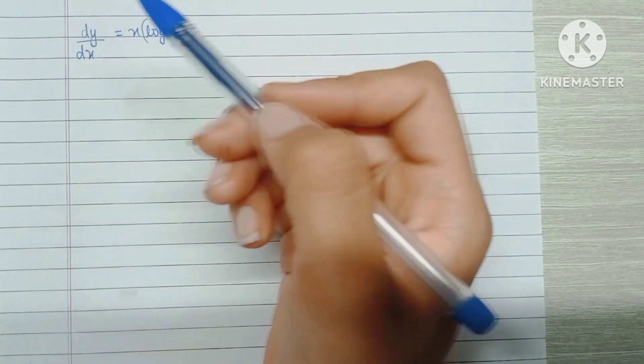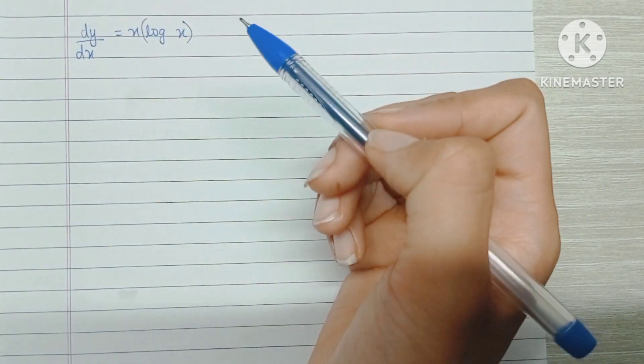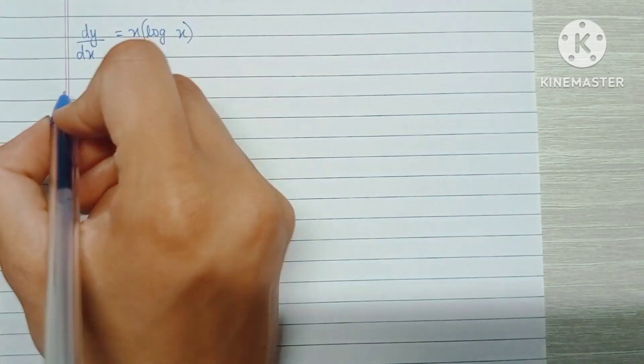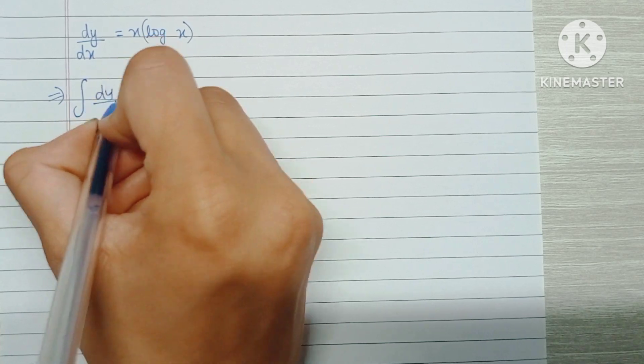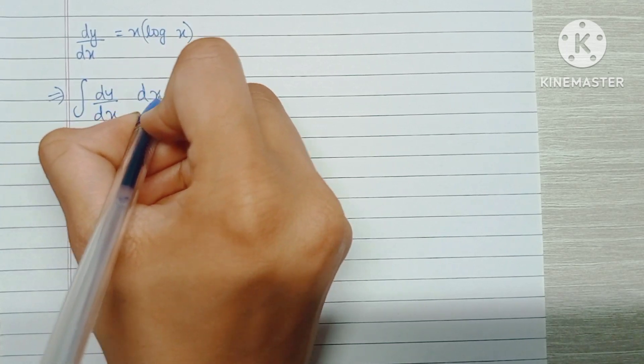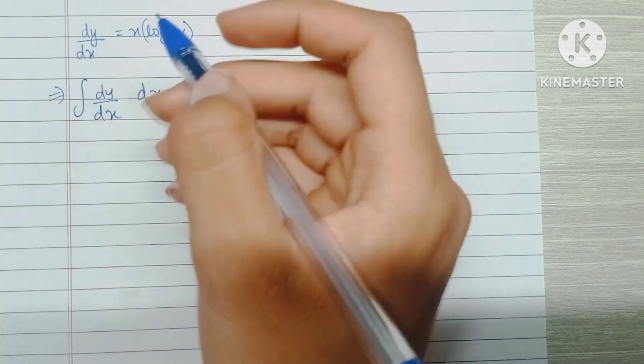To remove a differential, all we have to do is integrate. Which means I'm going to start by integrating both sides with respect to x because we have dy/dx.